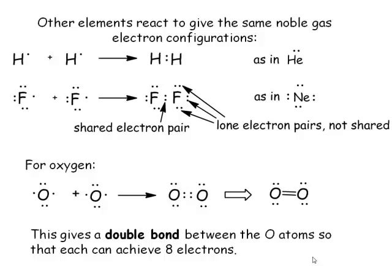So what can oxygen do? It can form another bond through the remaining odd electrons, so you end up with a double-bonded species with two pairs of bonding electrons between the atoms — a double bond. Are there any unpaired electrons in that Lewis structure? No.